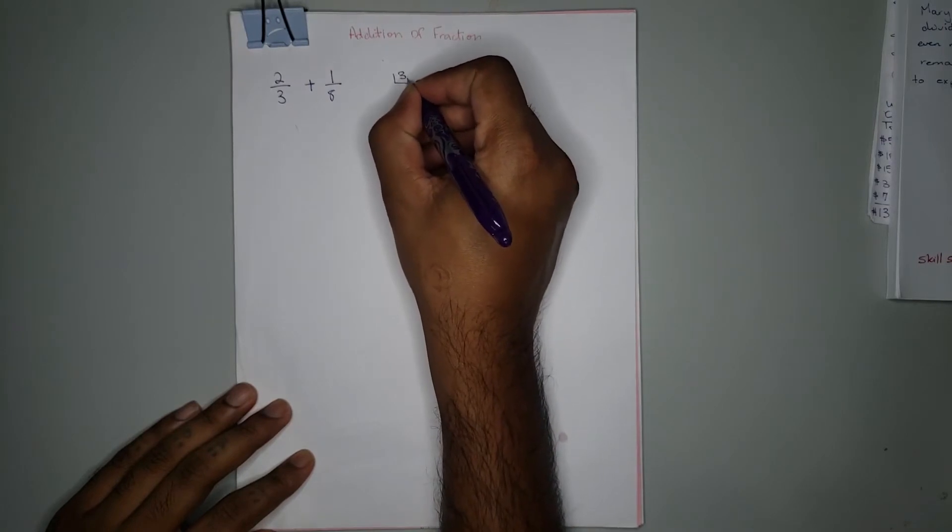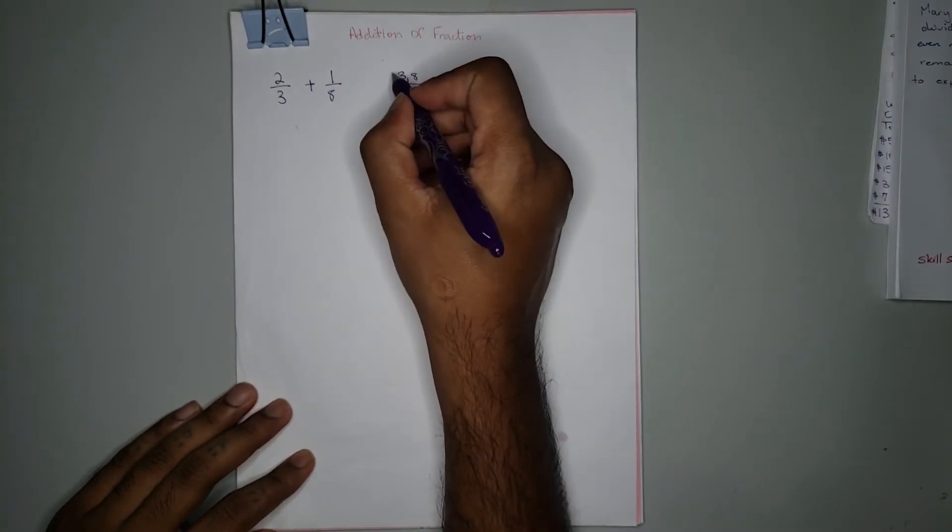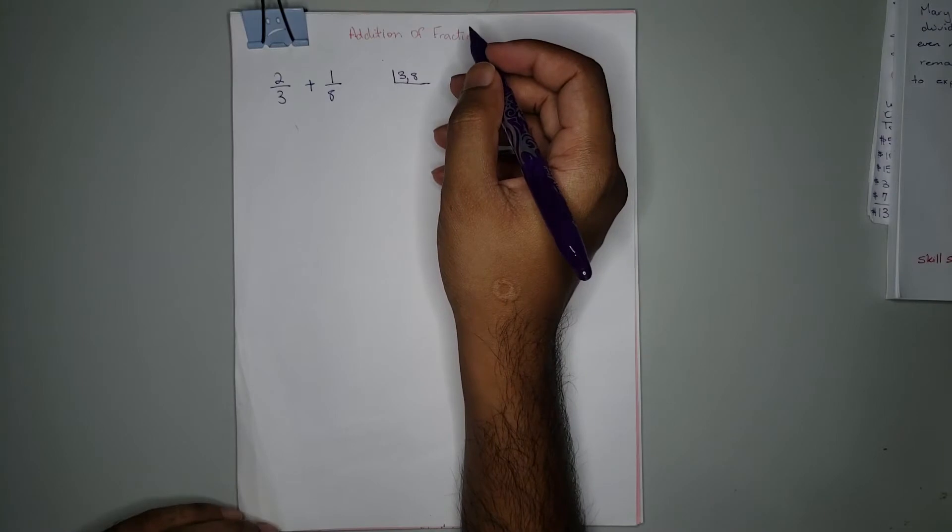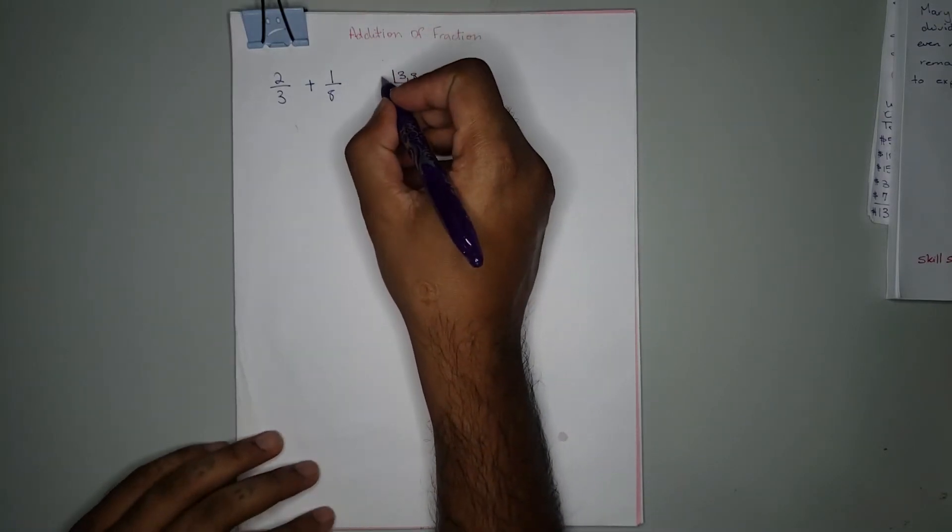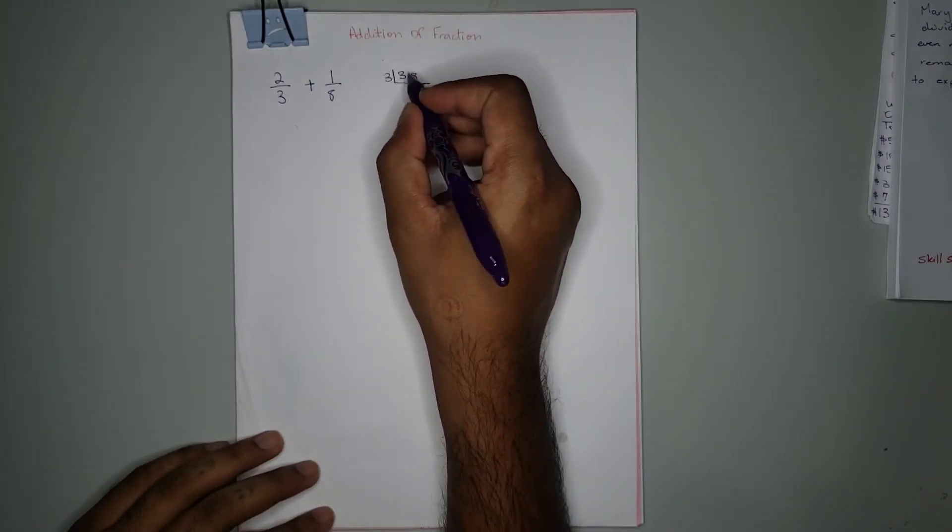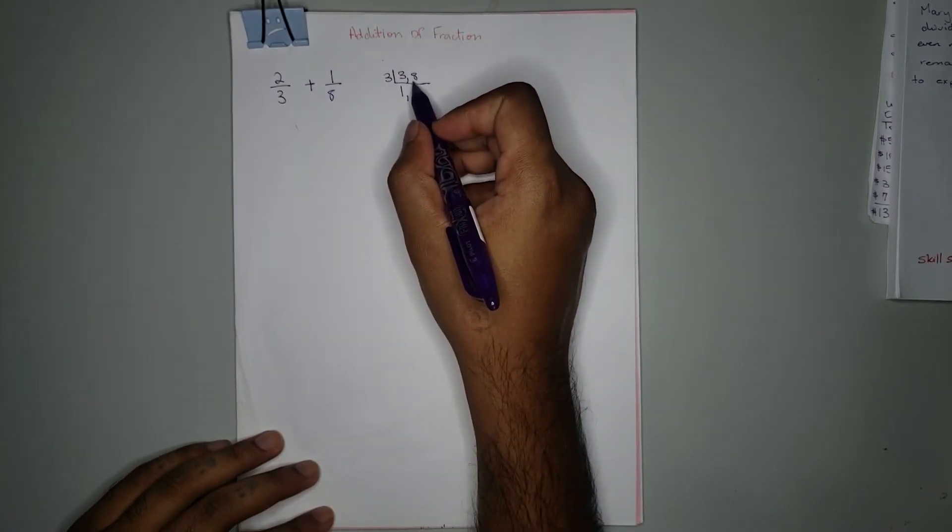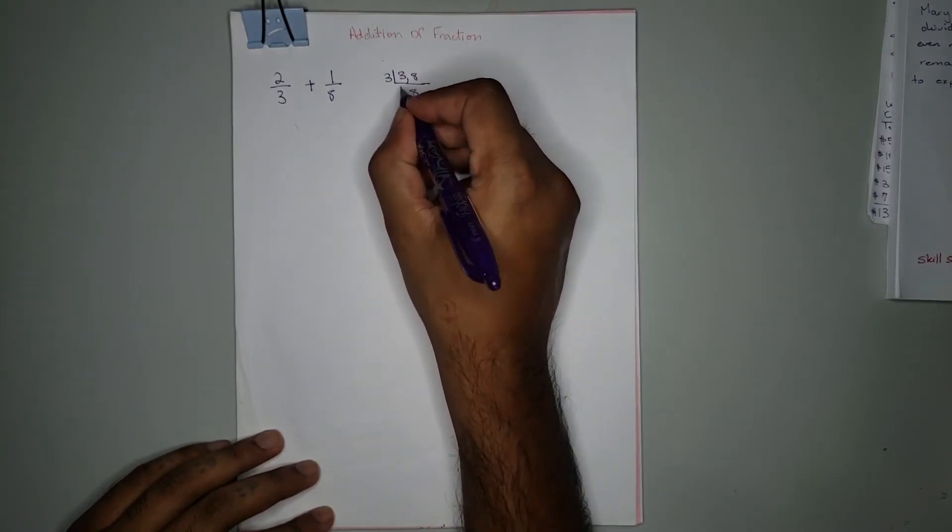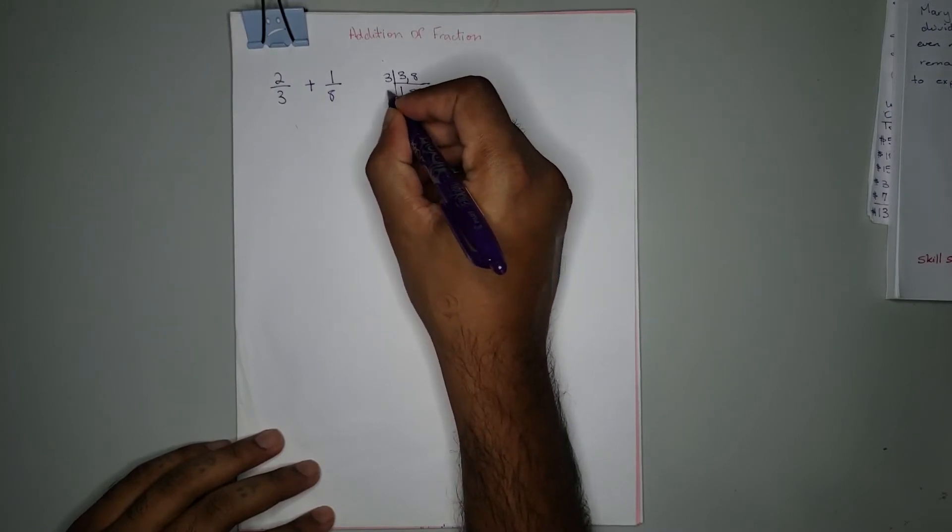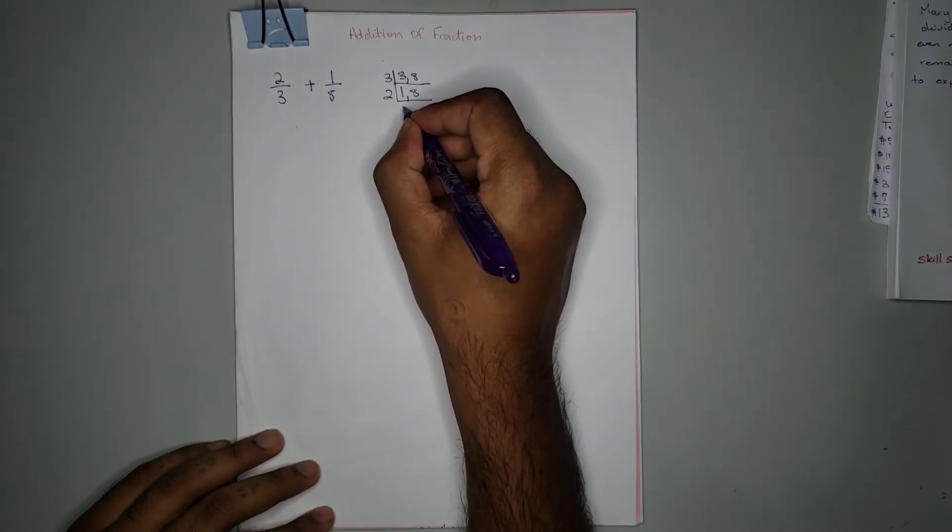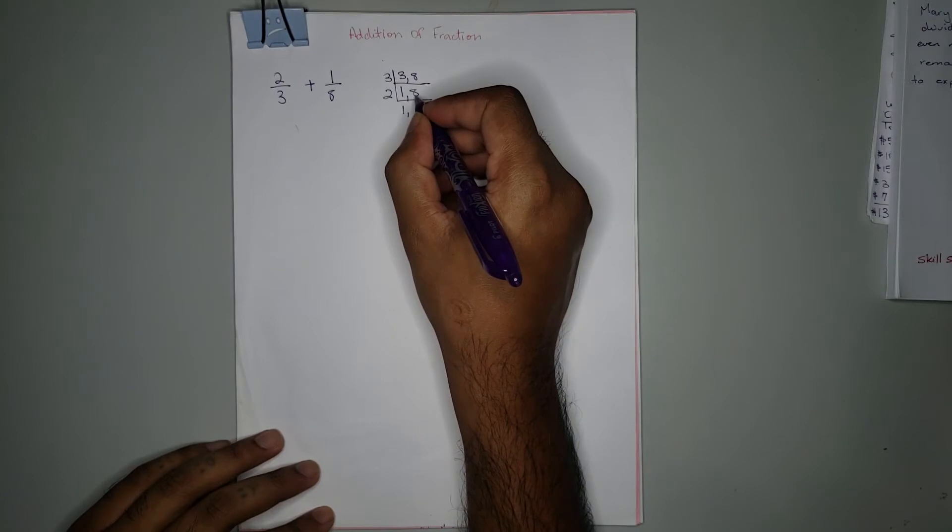So we have 3 and 8. To find the LCM, we divide using prime factors. First, we'll start with 3. Three can go into 3 one time without leaving a remainder. Three cannot go into 8 without leaving a remainder, so we write 8.